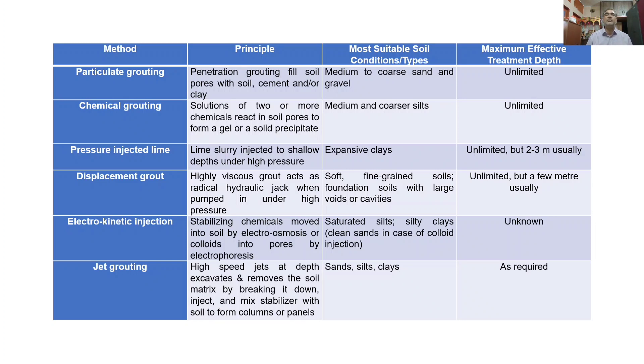Chemical grouting uses solutions of two or more chemicals which react in soil pores to form a gel or a solid precipitate. These are suitable for medium and coarser sands, and the effective treatment depth is unlimited.